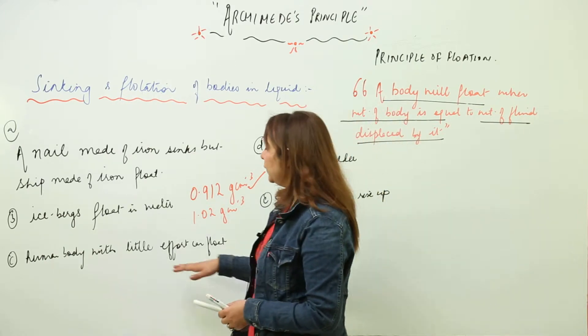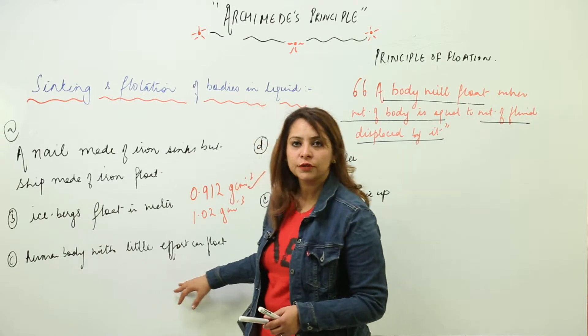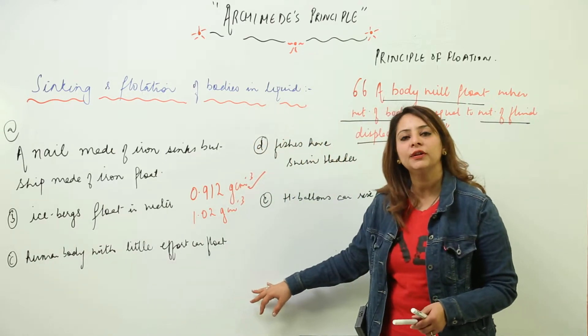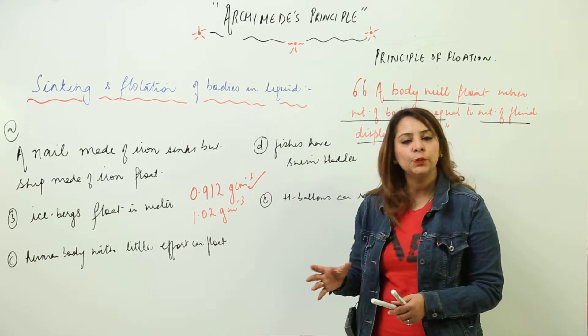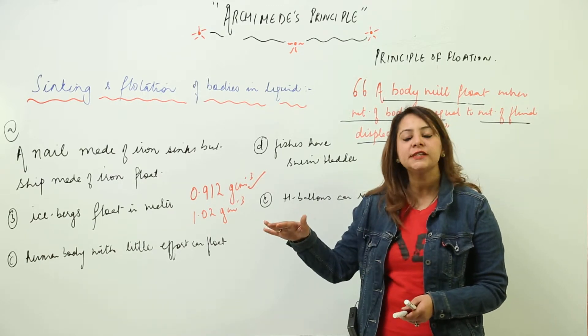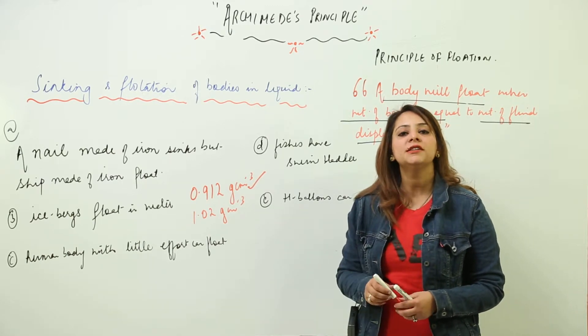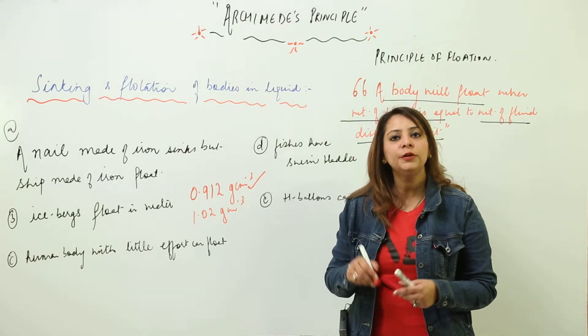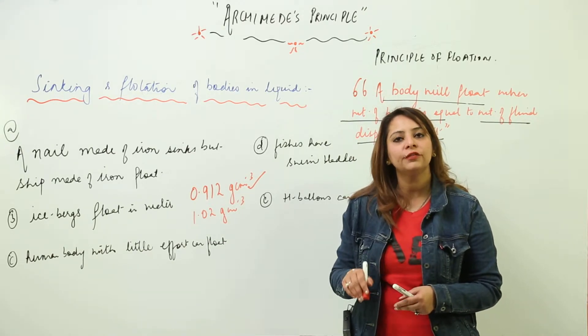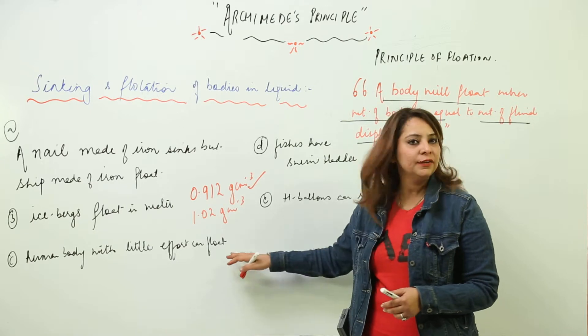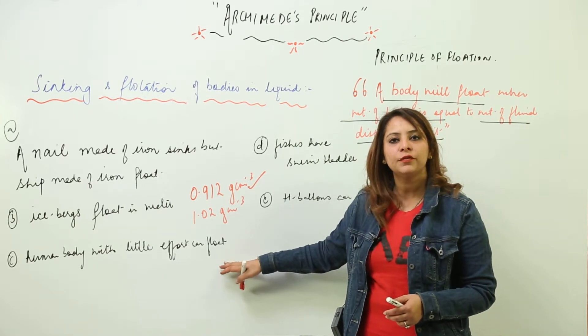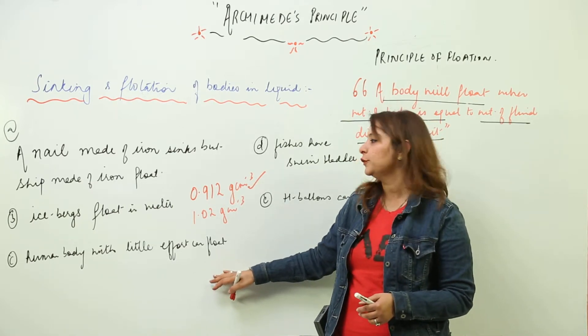Third, human body with little effort can float. We all do swimming and we can swim in a way that our body is floating on the surface. We can do that because the average density of the human body is equal to the average density of the water. By making a little effort we can float on the surface of water.